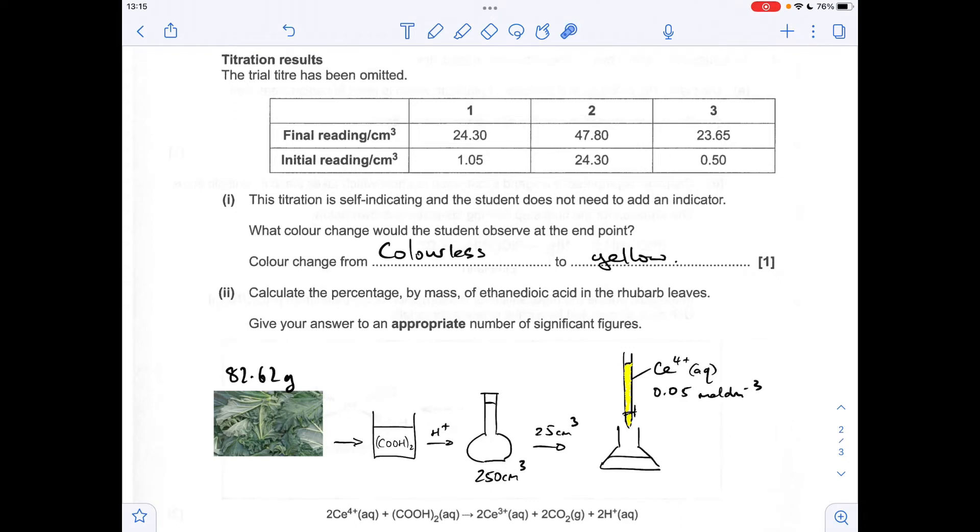So for the calculation, the first thing I'm going to do is work out the three titres for these accurate titrations, and then we'll establish the mean titre from them. So hopefully you can see that titrations 1 and 3 are concordant. So we're going to use those for the mean. They're within 0.1 of each other. This is not concordant, so we're going to ignore that one. So the mean titre is 23.20 centimetres cubed.